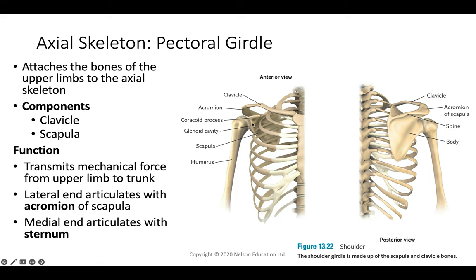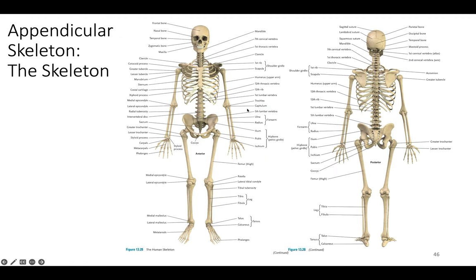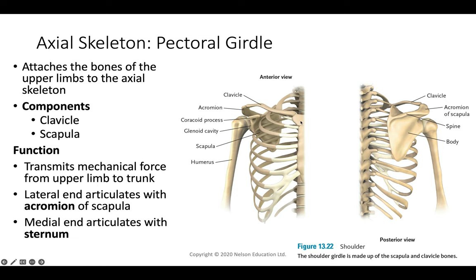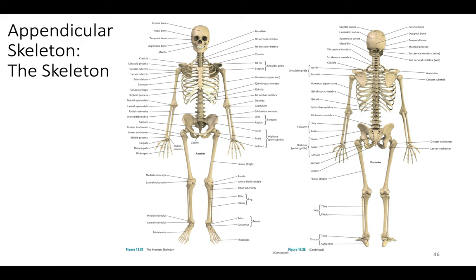The pectoral girdle connects the axial to the appendicular skeleton at the shoulder. It's comprised of the clavicle, scapula, and the articulation point for the humerus, transferring mechanical force from the upper limb into the body. The lateral end of the clavicle articulates with the acromion of the scapula; the medial end articulates with the sternum. We have already covered the cranial bones, vertebrae, hip girdle, and pectoral girdle; now we focus on the appendicular skeleton.